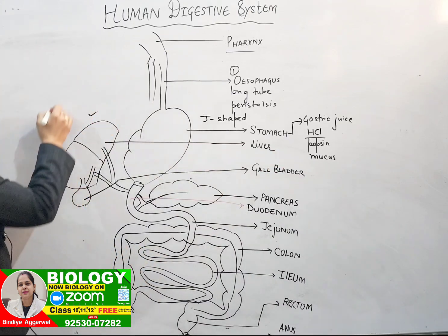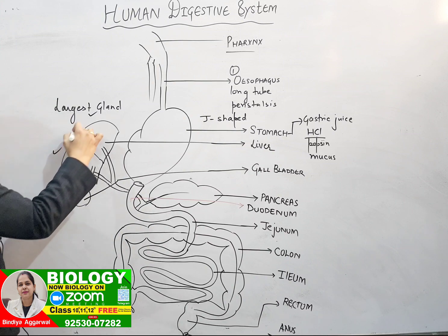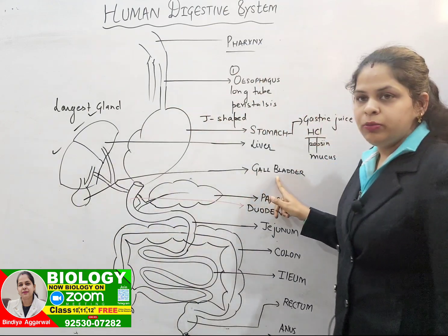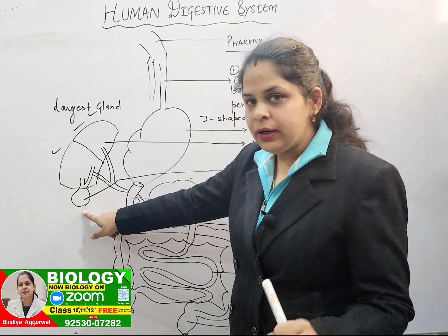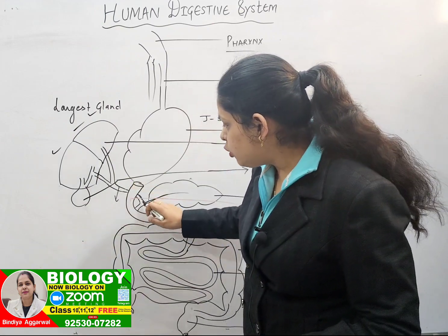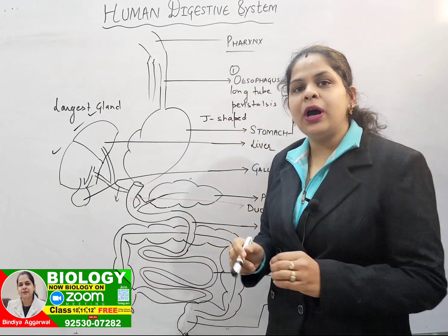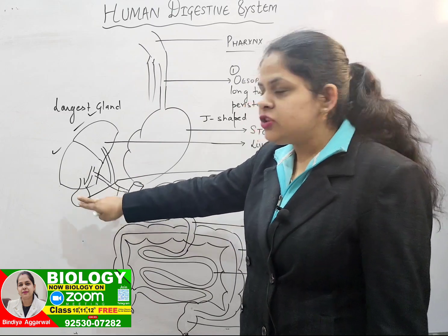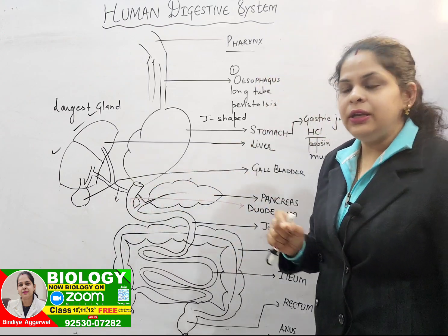The liver is the largest gland present in our body. It has two lobes: left and right lobe. Attached to it in a hanging style is the gallbladder. The liver secretes bile juice, and extra bile juice is stored in the gallbladder. Whenever needed, the bile juice from the gallbladder travels through a duct that connects with the pancreatic duct and releases all the juice into the duodenum, which is the first part of the small intestine.